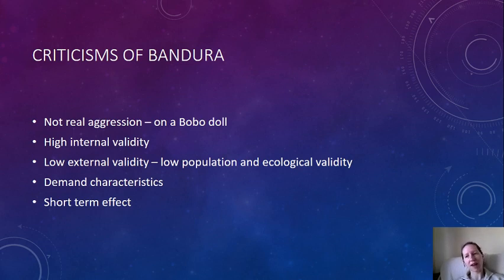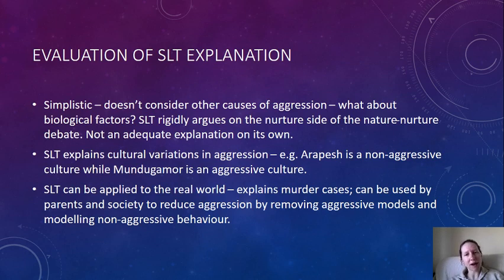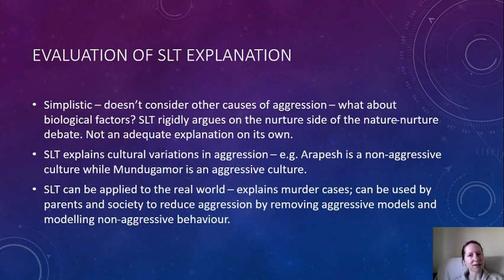Evaluating social learning theory as an explanation of aggression: first, it's a simplistic explanation that ignores other potential causes, particularly biological factors. We've looked at testosterone, the role of the amygdala, and serotonin — all of which affect aggression. Social learning theory argues rigidly on the side of nurture, excluding any discussion of nature. That's inadequate because biological elements do play a part, and aggression would be better explained by taking both nature and nurture into account.